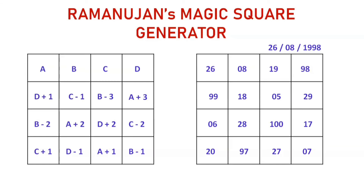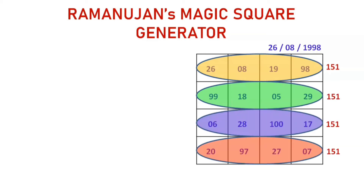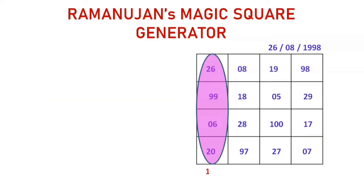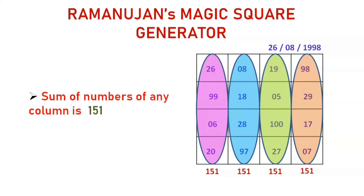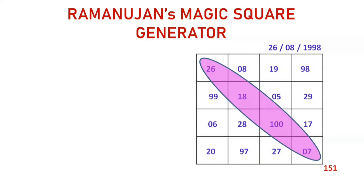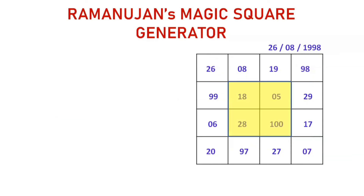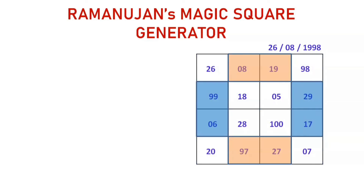Now let us check all the sums of rows, columns, and diagonals. You can observe that the sum of every row is 151. The sum of each diagonal is also 151. Similarly, you can check the sum of all combinations like we discussed before — the central square, numbers in the extreme corners, the set of 4 numbers in the 4 corners, and the same-colored boxes — all combinations are also 151.